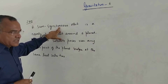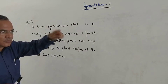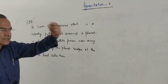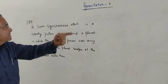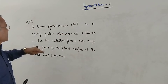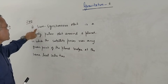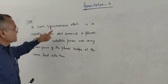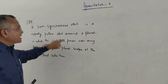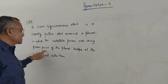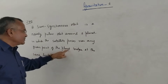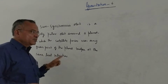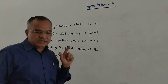A polar satellite passes from north pole to south pole and keeps revolving in that orbit. It is called sun-synchronized because it will pass over any particular point on the planet surface at the same local solar time.